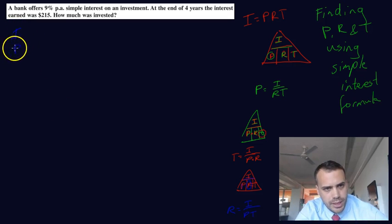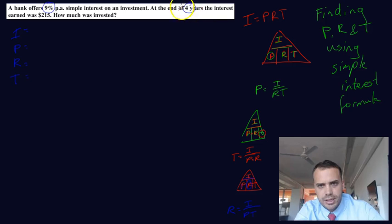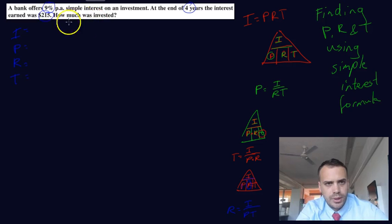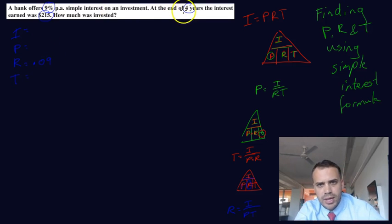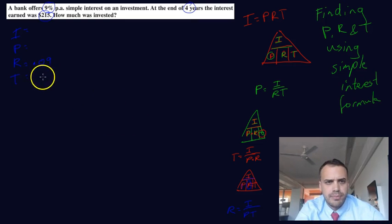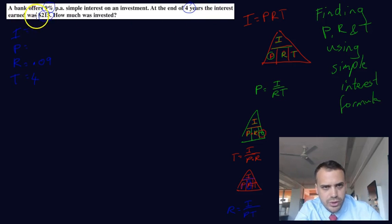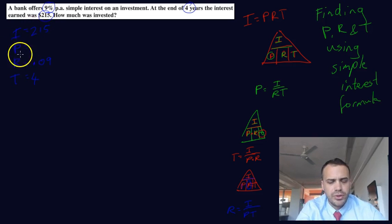P, I, P, R, T. Now look in the question for numbers. Here's a number, here's a number, here's a number. And now figure out what those numbers are. 9% per annum. Percent, that's a rate. So that goes in the rate bit. At the end of four years, four years, that's a time. That goes in the T column. The interest earned was $215. The interest earned was $215. That's interest. Great.